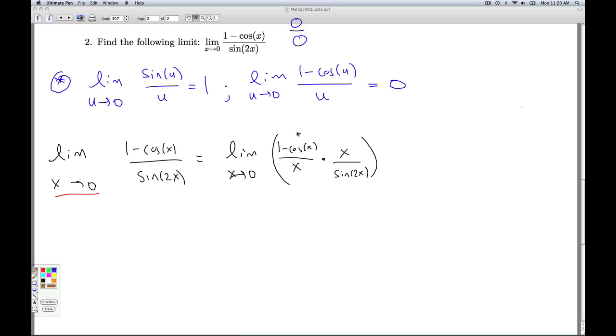This first factor, I know where it's going. I know it's going to 0. The question is, what's going on with this factor? If I know this factor is going to a real number, then I can conclude that my limit is 0 by using the limit laws. So let's take a closer look at that limit.